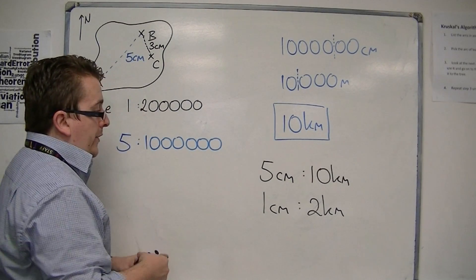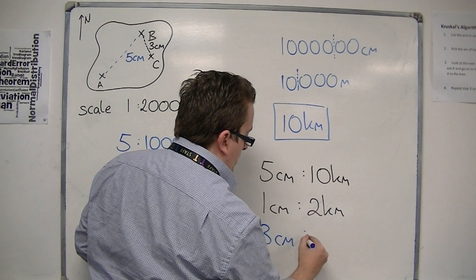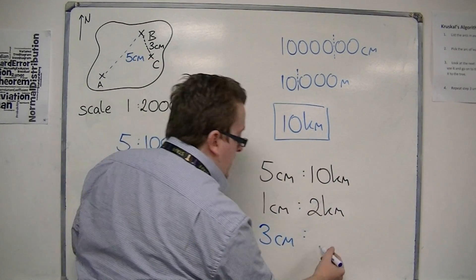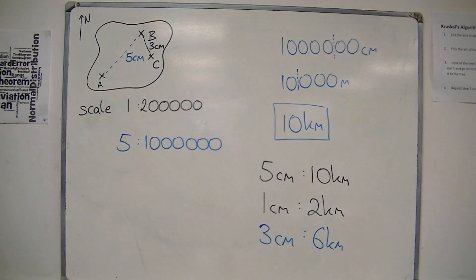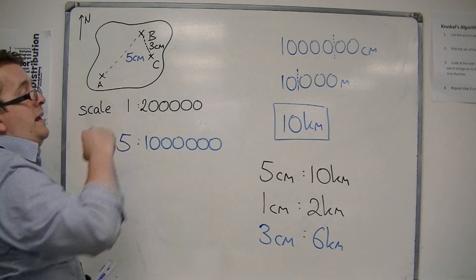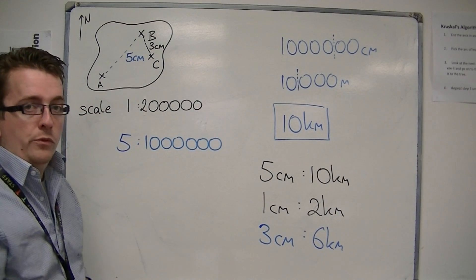So that three centimetres would be multiplying both by three. So they must be six kilometres apart. So that would mean that B and C would be six kilometres. And that's how easy the ratio can now be used.